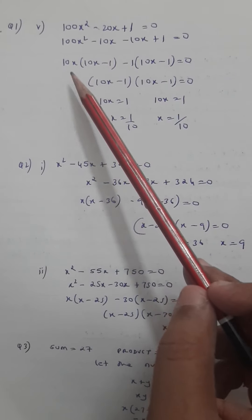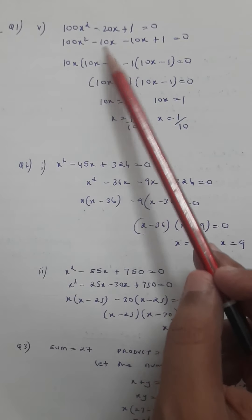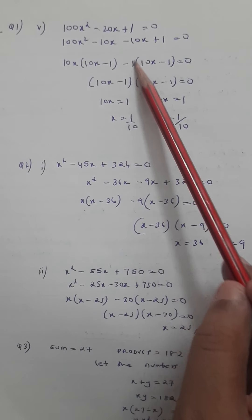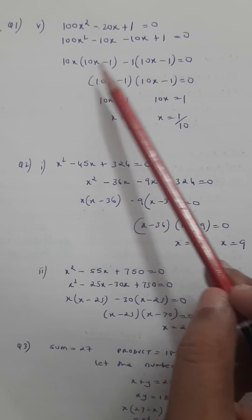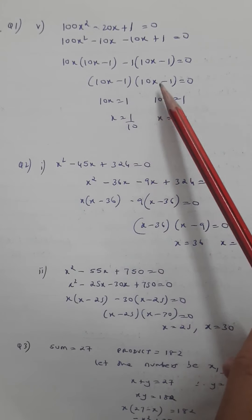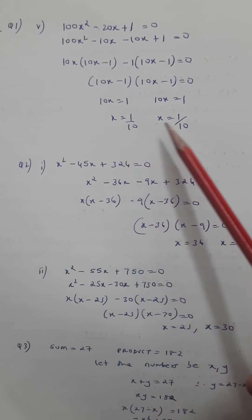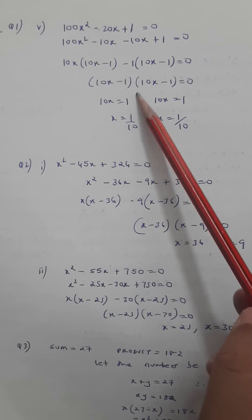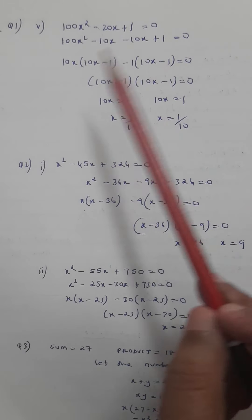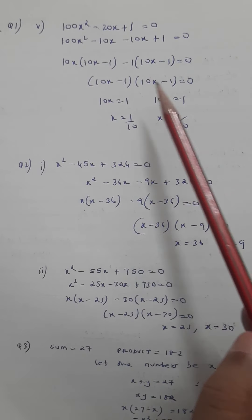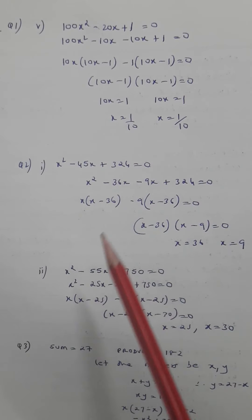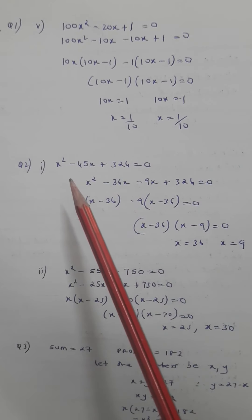Taking common in the first two terms: 10x is common, giving 10x minus 1. In the next part, minus 1 is common, giving 10x minus 1. Both brackets are the same, so you combine them. Since both factors are identical, the values of x will also be the same. That's how you find the value of x by splitting the middle term.